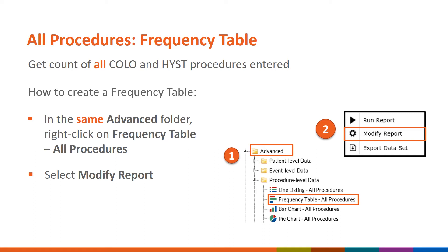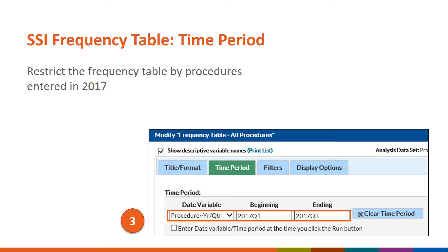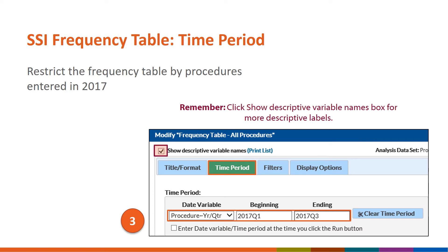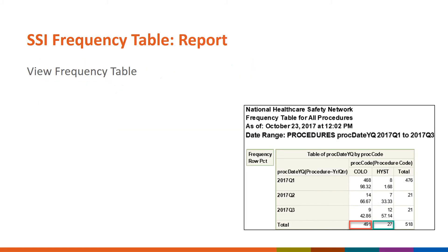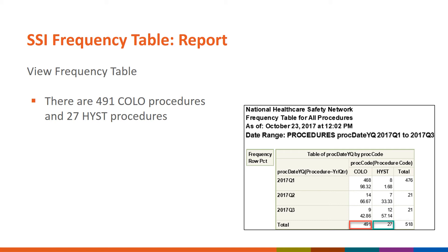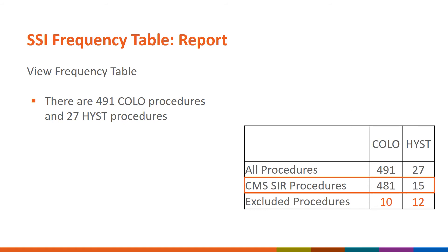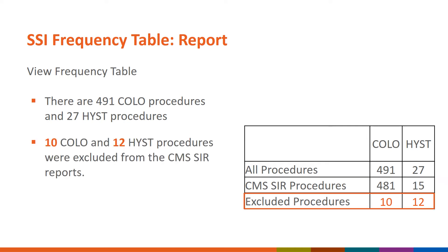You will be utilizing the same filters you used in the line list. Restrict your frequency table by procedures entered in 2017 by filtering by time period. Clicking the Show Descriptive Variable Names box will give you more descriptive labels. Filter the frequency table by procedure code colo and hist. Remember to select OR to be able to see both colo and hist procedures. Select Run to see your frequency table. There are 491 colo procedures and 27 hist procedures. In the CMS-SSI-SIR reports, there were 481 colo and 15 hist procedures. Therefore, there were 10 colo and 12 hist procedures excluded from your CMS-SSI-SIR calculations.